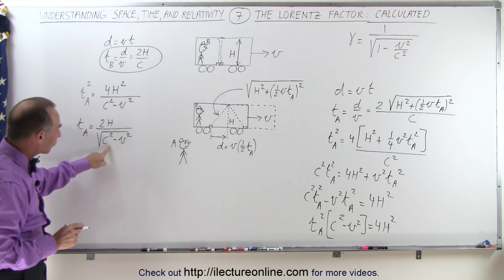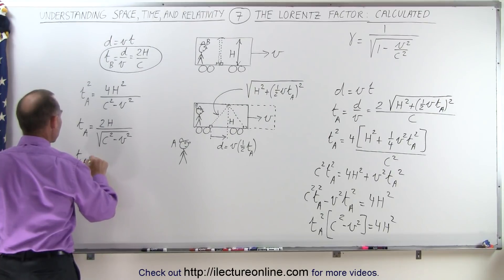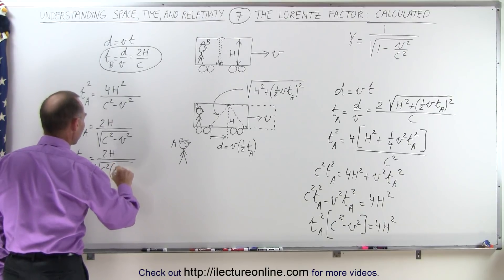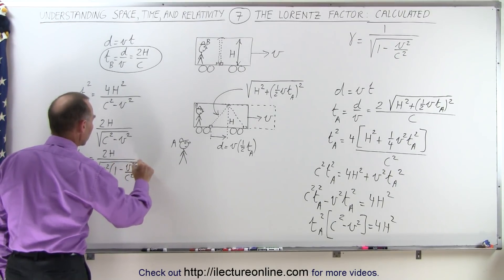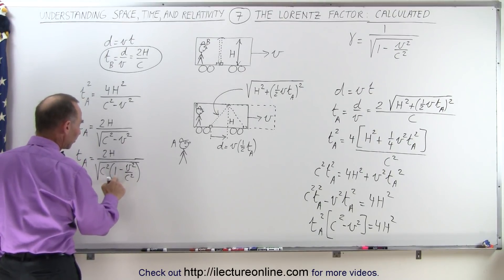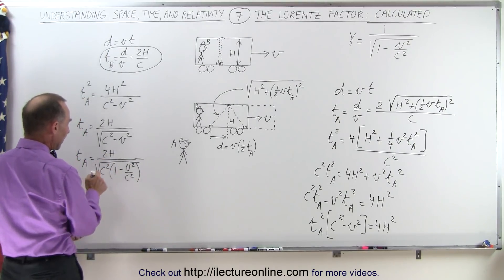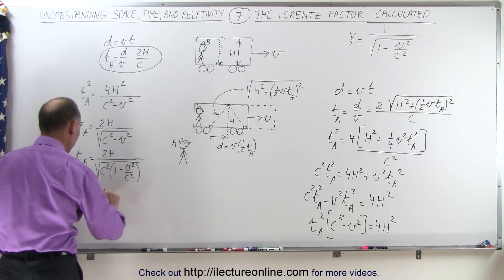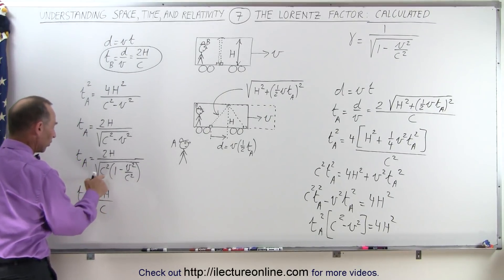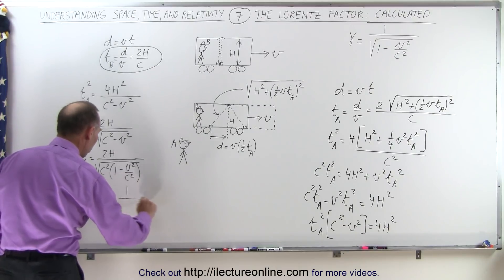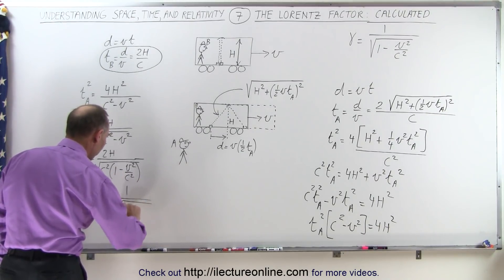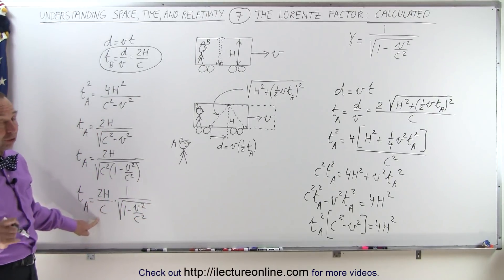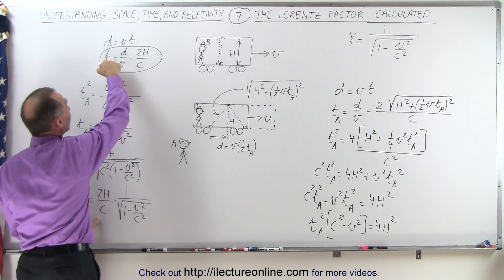Now factoring out C squared from under the radical: T_A equals 2h divided by the square root of C squared times (1 minus V squared over C squared). Since the square root of C squared is C, we can bring C out front: T_A equals 2h over C, times one over the square root of (1 minus V squared over C squared). Notice that 2h divided by C is exactly the time as measured by observer B.